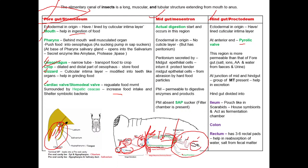Ileum and colon are pouch-like structures which house symbiotic microorganisms and act as fermentation chambers. The last part of the hindgut is the rectum, which has three to six rectal pads. These pads help in reabsorption of water and salts from the fecal matter. Insects do not drink water, so they always focus on recovering water even from fecal matter.